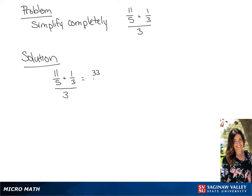The common denominator will be 15, so we multiply the first fraction by 3 over 3 and the second fraction by 5 over 5, giving us 33 fifteenths plus 5 fifteenths, all over 3.